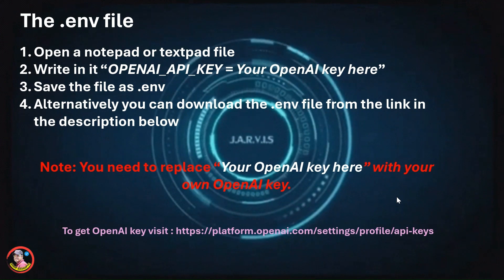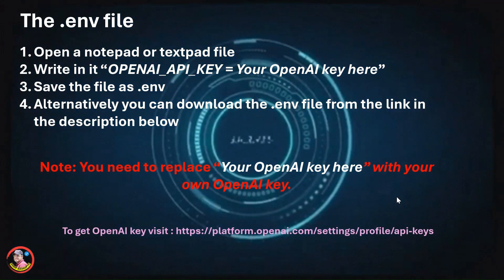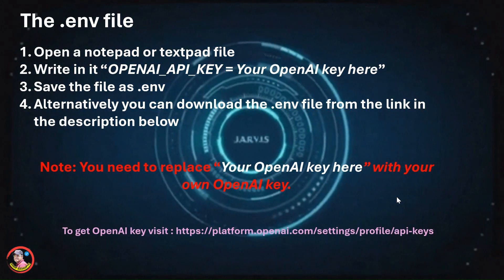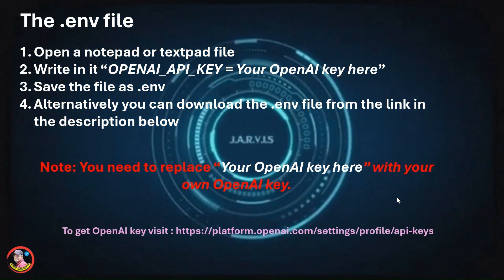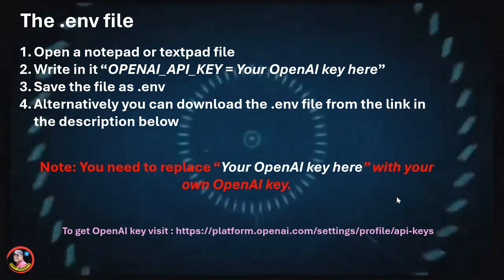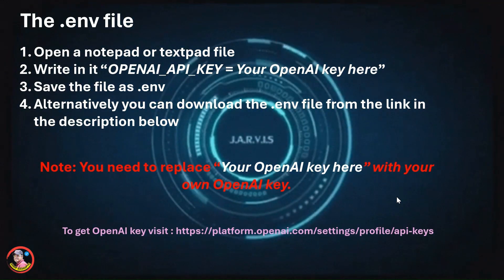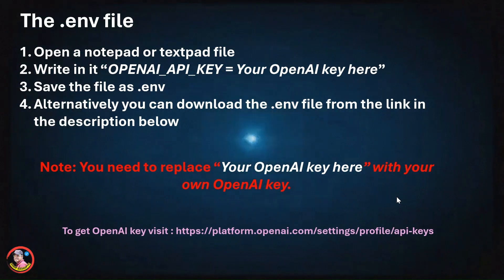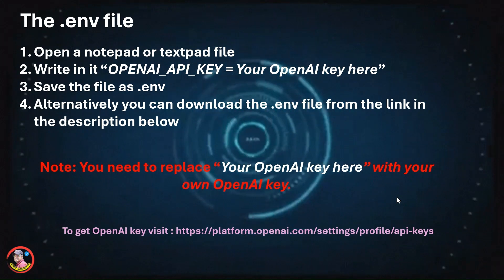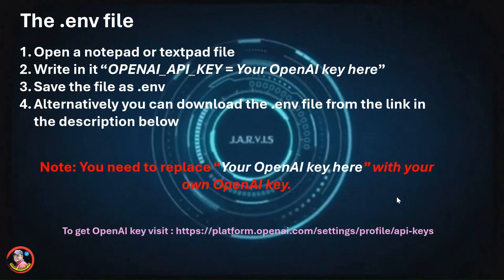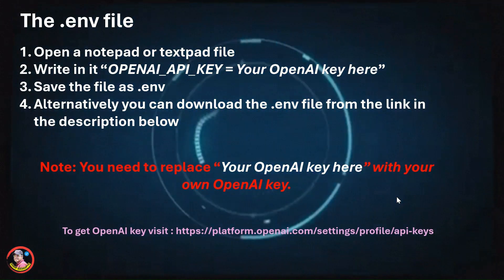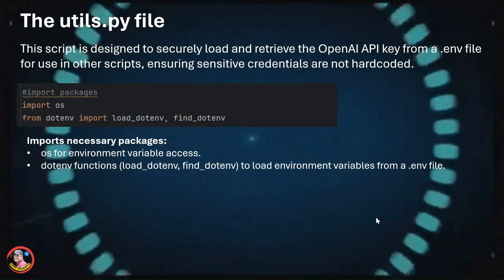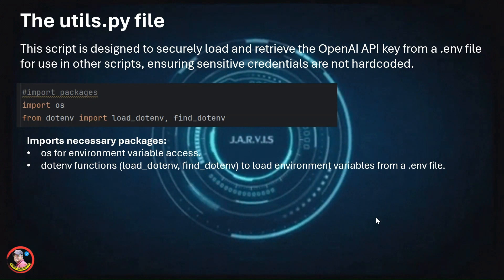Next, you need to create the .env file. To do that, open a Notepad or text editor and write only one line as shown here, then save it as a .env file. Before saving, replace the placeholder with your own OpenAI API key, which you can get by visiting the link shown on screen — I'll also provide a reference link in the description below. Alternatively, you can download this same file from the description, but you'll still need to open it and replace the placeholder with your own OpenAI API key.